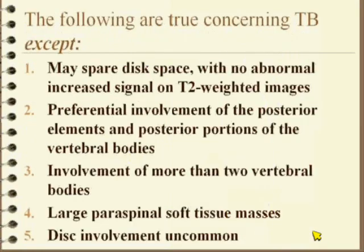Let's talk about TB. The following are true concerning TB, except: it may spare the disc space with no abnormal increased signal on T2; preferential involvement of the posterior elements and posterior portions of the bodies; it involves more than two vertebral bodies; it gives large paraspinal soft tissue masses; and disc involvement is uncommon. Which is not correct?